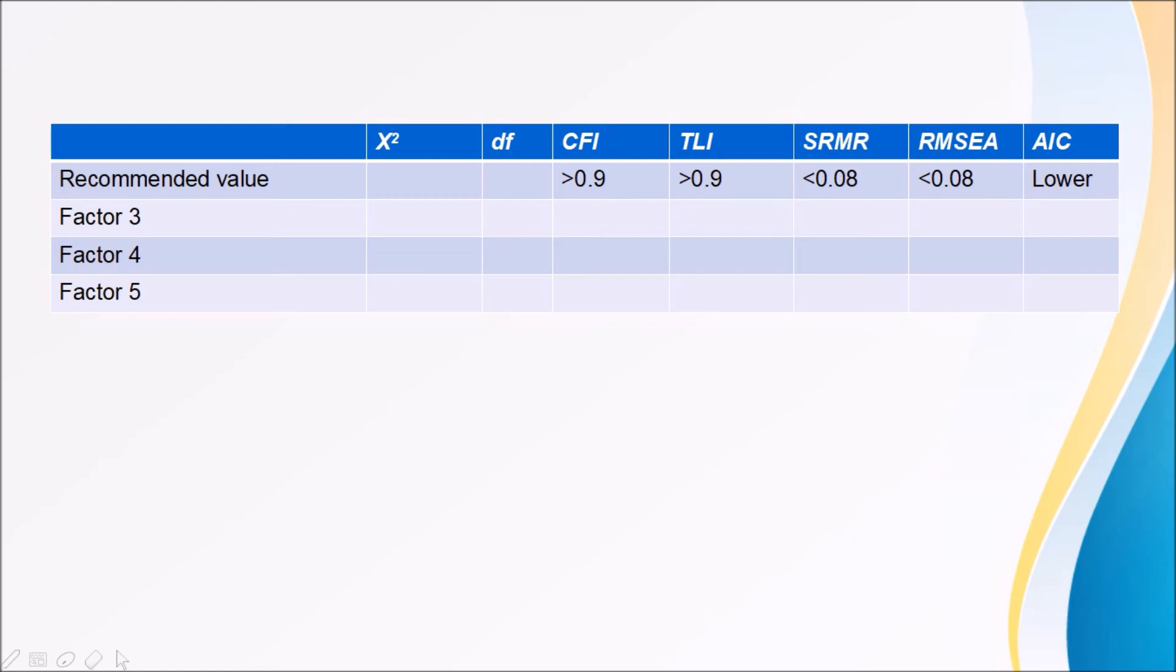Since Mplus runs the analysis for each, for the range—for example, if you have given a range of the number of expected factors from three to five, it will generate three kinds of results: factor three exploratory factor analysis, factor four, and then factor five. So on the basis of these indices, then you have to examine which one is the better option. As AIC is concerned, the lower one is the better one.